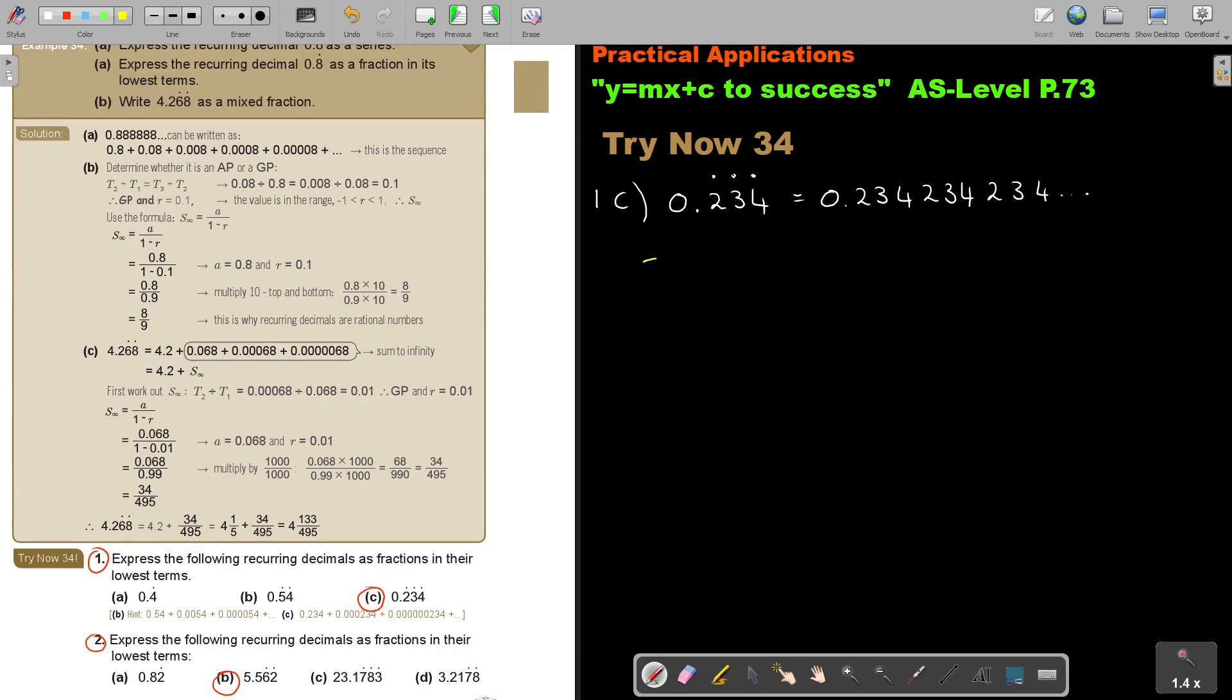So as a sequence it's 0.234 and then put zeros in this place. So it's 0.000234, 0.000000, so it's 6 zeros and then 234.